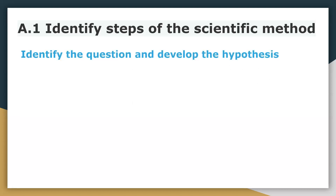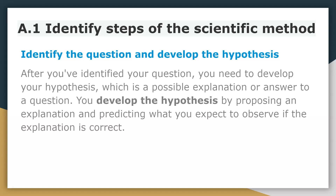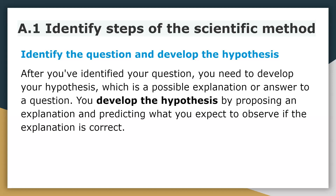The second part is developing the hypothesis. After you've identified your question, you need to develop your hypothesis, which is a possible explanation or answer to a question. You develop the hypothesis by proposing an explanation and predicting what you expect to observe if the explanation is correct. Effectively, all you're trying to do in this step is figure out what you think the answer to your question is.